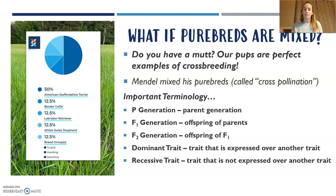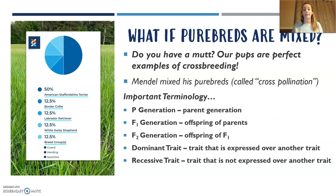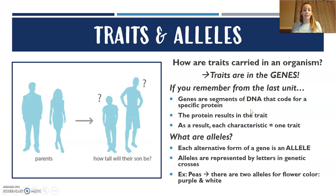In peas, inbreeding isn't really as much of a problem as it would be in humans, but you get the point. So then we have dominant versus recessive. Dominant traits are traits that are expressed over another — so you could say that purple flowers are dominant in peas, meaning they're going to be expressed instead of white. We'll talk about alleles in just a second, which makes that a little more clear.